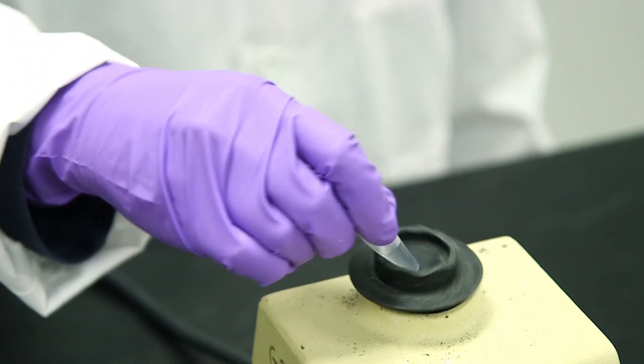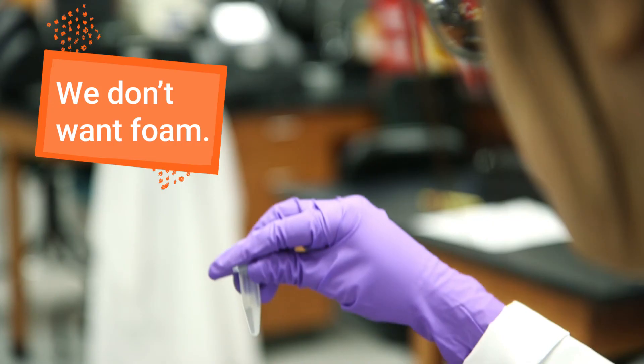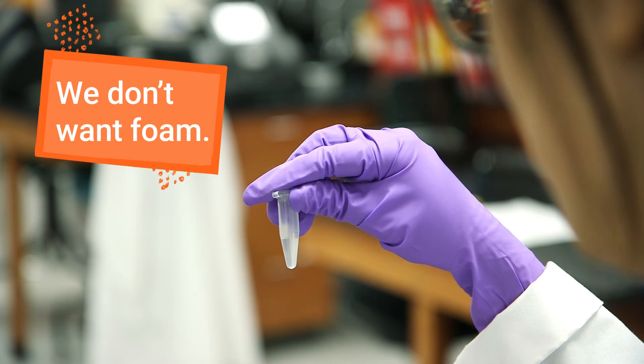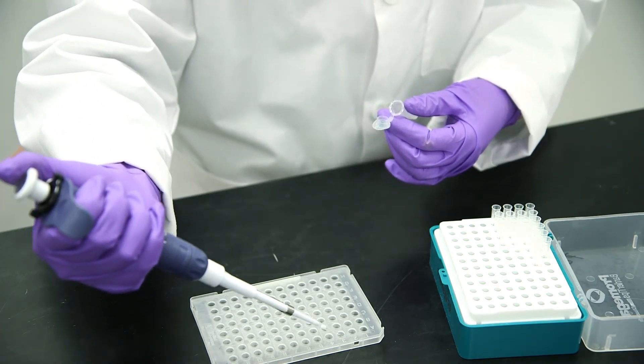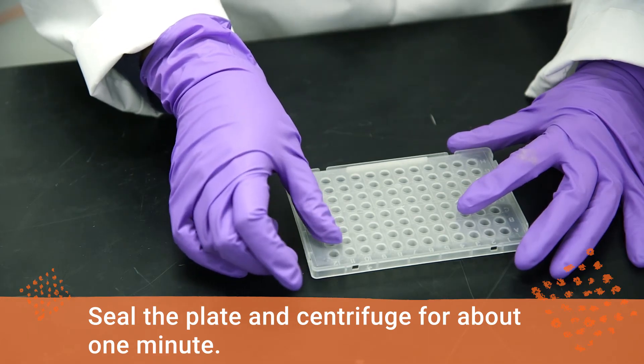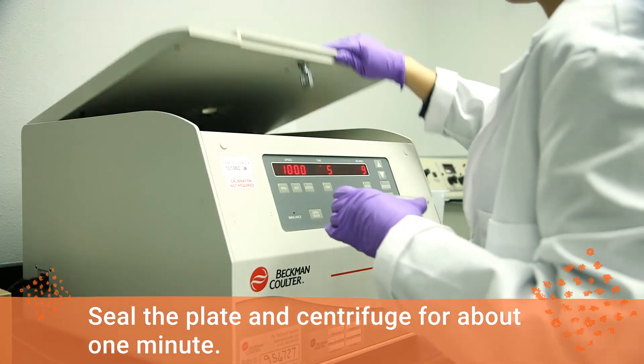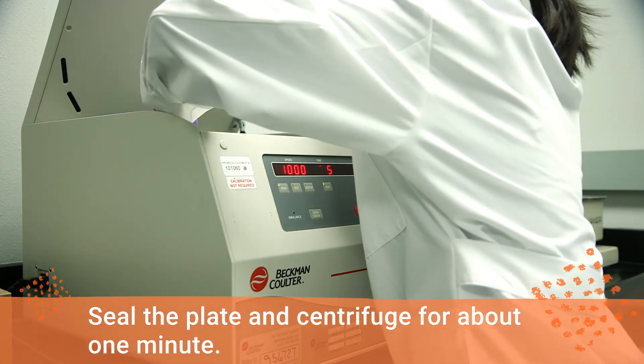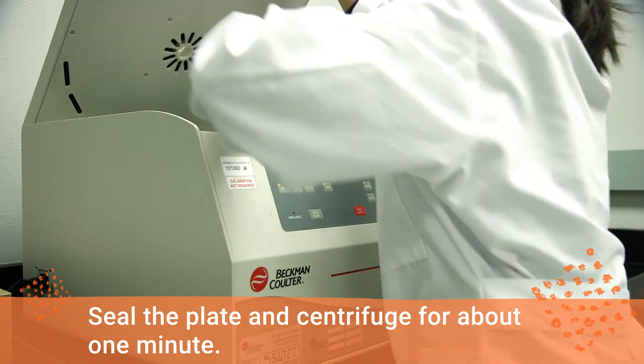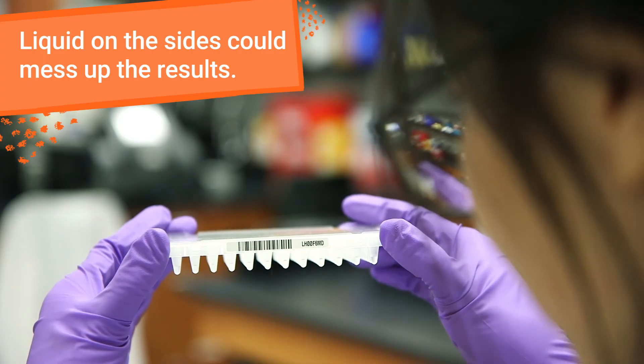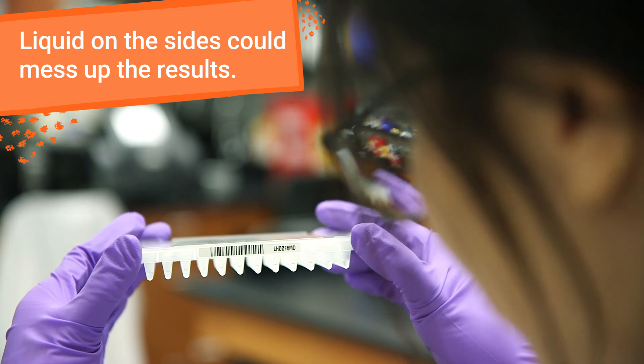Gently vortex the tube to make sure it's fully mixed. Make sure it doesn't foam. Carefully add reaction mix to each well. Seal the plate and centrifuge it at a low speed for about one minute to make sure all the reagents and sample go to the bottom of the wells. If liquid stays on the side of the well, it could mess up your results.